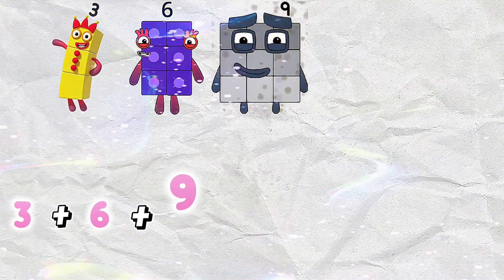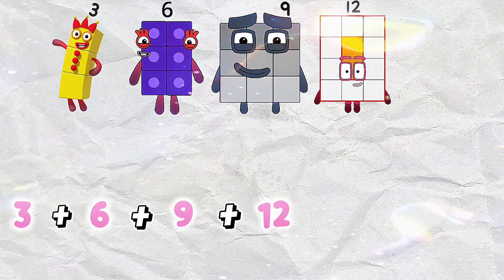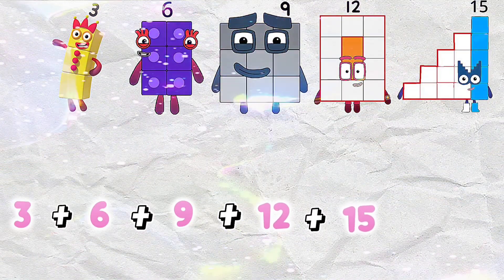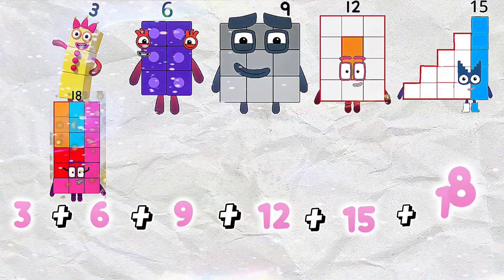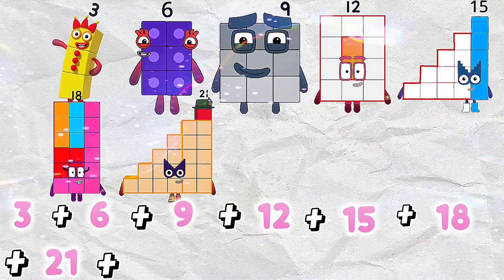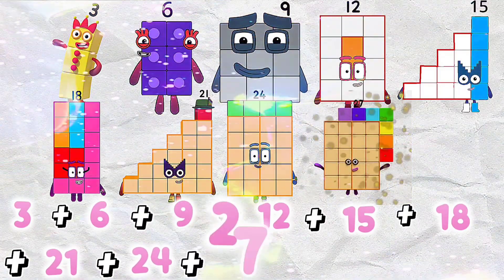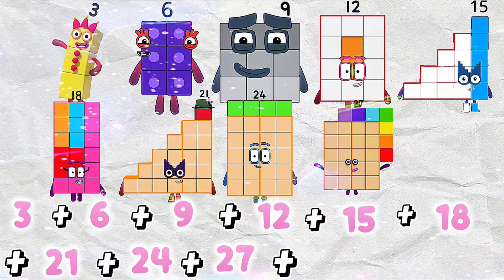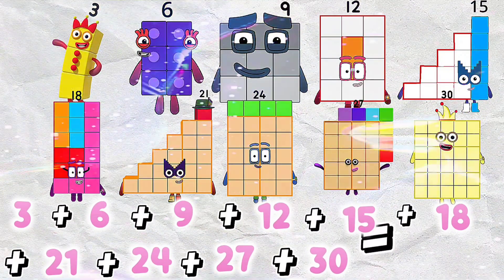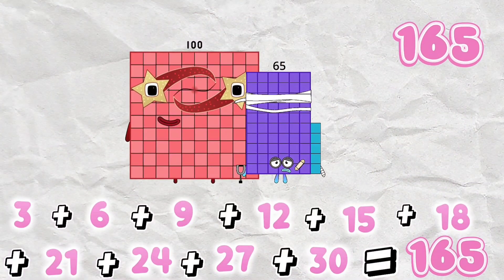3 plus 6 plus 9 plus 12 plus 15 plus 18 plus 21 plus 24 plus 27 plus 30 is equals to 165.